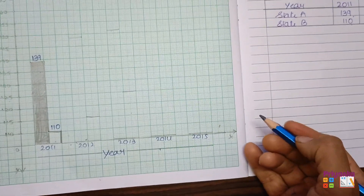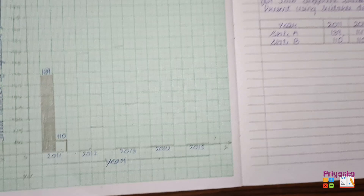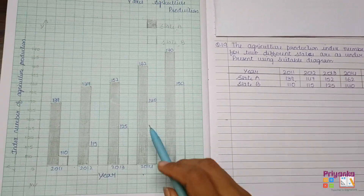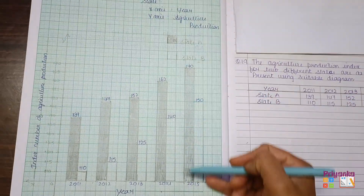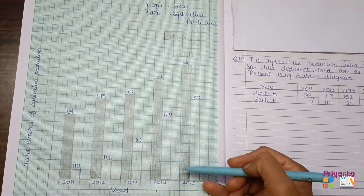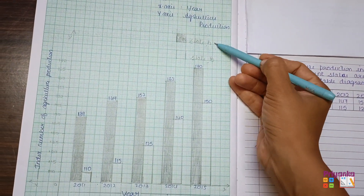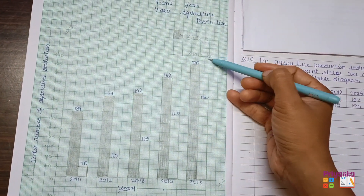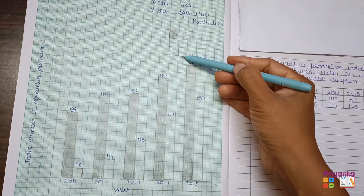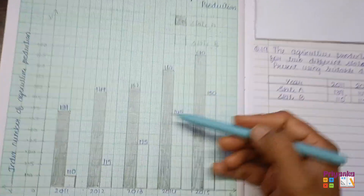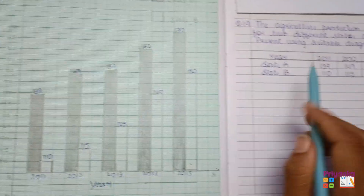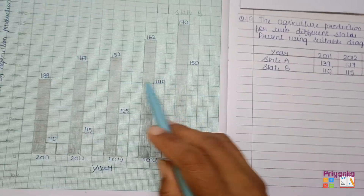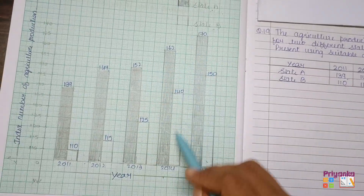Continue the same way for years 2014 and 2015. After completing all the margins, the final diagram shows state A with dark shade and state B with light shade. At the end, don't forget to write down the numbers showing what margin you have taken for the graph.